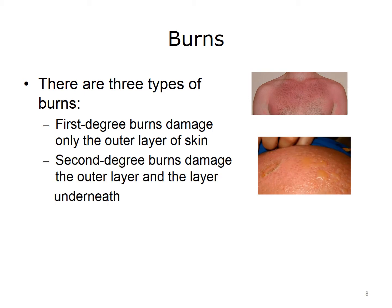Second degree burns damage the outer layer and the layer underneath it. These burns are also referred to as partial thickness burns. Second degree burns are sometimes further described as superficial, involving the more superficial part of the dermis, or deep, involving the superficial and deep parts of the dermis. Second degree burns are pink or red, swollen, and painful, and they develop blisters that may ooze a clear fluid. The burned area may blanch or whiten when touched.